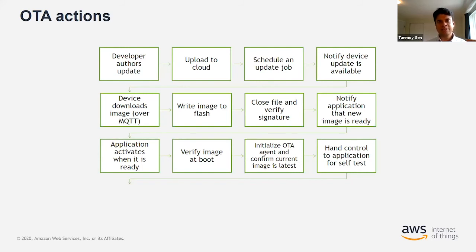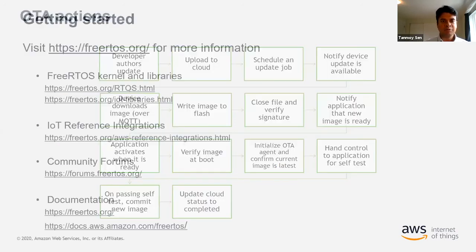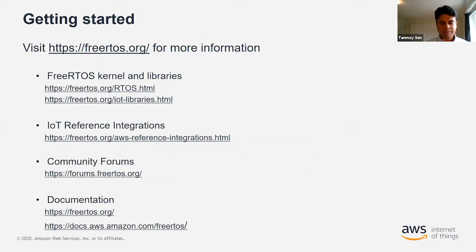Finally, the device sends the status to AWS IoT that the OTA update job has been successfully completed. This is an end-to-end cloud-to-device story: the operator initiates the process on the cloud, the notification is sent to the device, the device downloads the entire firmware and notifies back to the cloud that execution has been completed and the new firmware has been successfully installed. You are also free to use HTTP-based downloads — for example, using MQTT just for notification and downloading megabytes of firmware over HTTP.